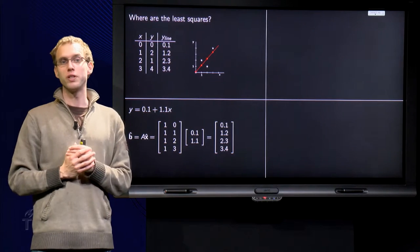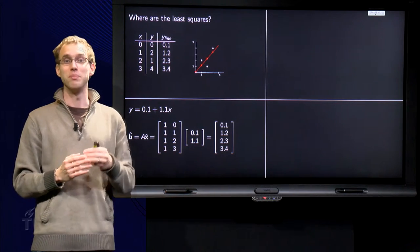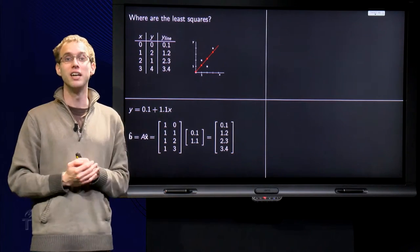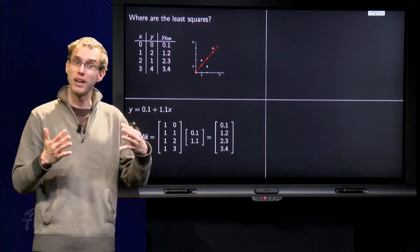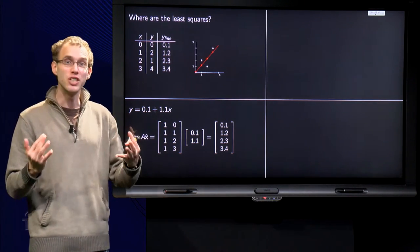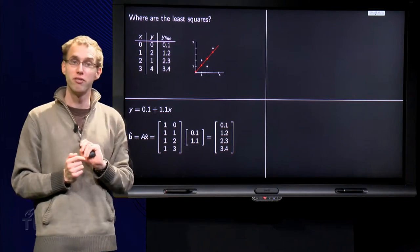Now first we want to compute b hat, because we want information about z, the least squares error. Where is the least squares error in this figure over here?